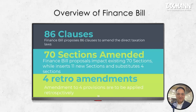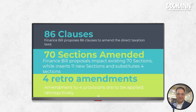Out of these 86 clauses, they make amendment in the existing 70 sections of the Income Tax Act, while some clauses insert 11 new sections and completely substitute four sections. There are just four retrospective amendments — that is a big relief. Another relief is that all these amendments are in favor of the taxpayers.